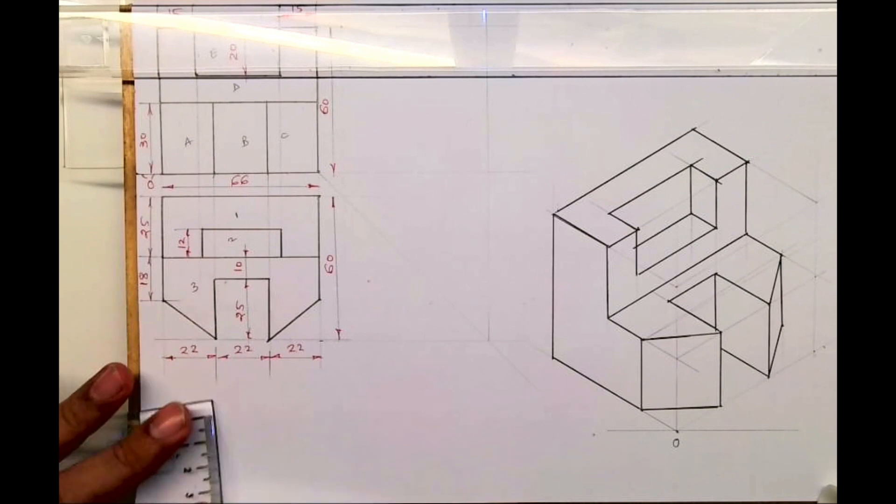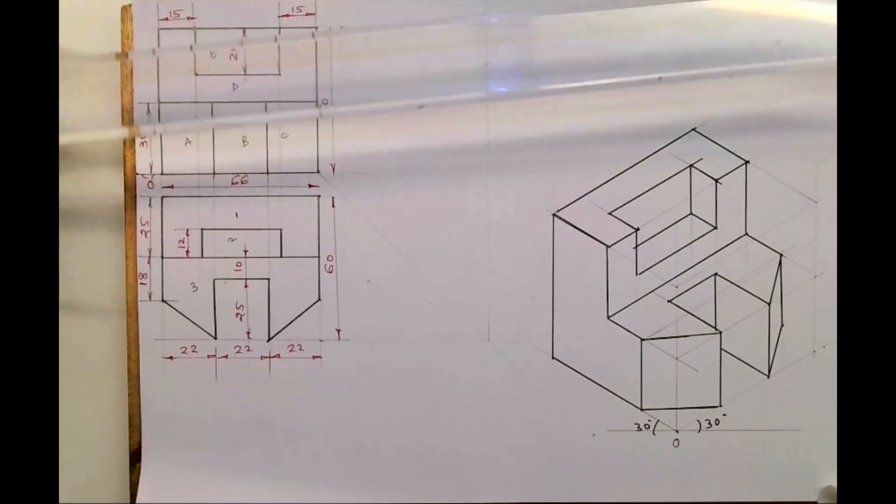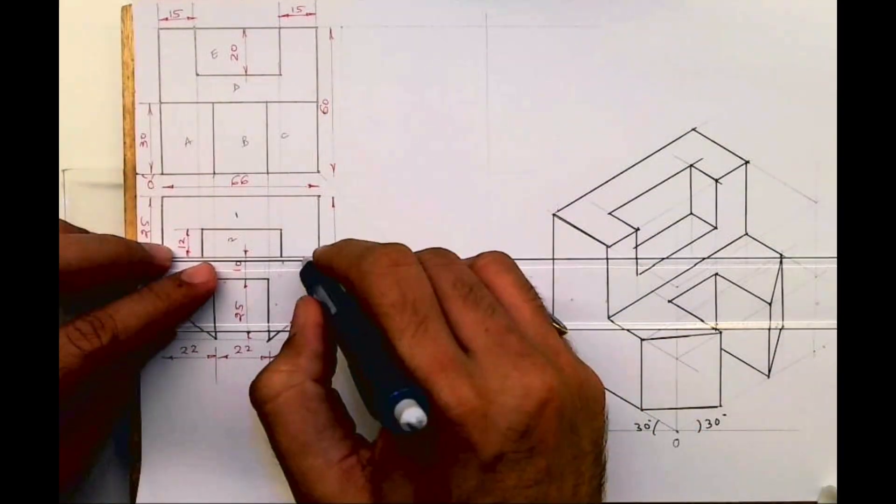Now we need to draw side view - the missing side view. This is for CBSE people, those who are doing CBSE engineering graphics. For them they have this in project, so what they need to do is project from top view.